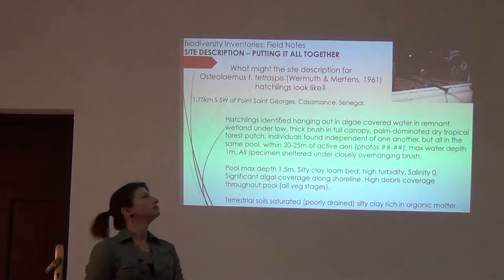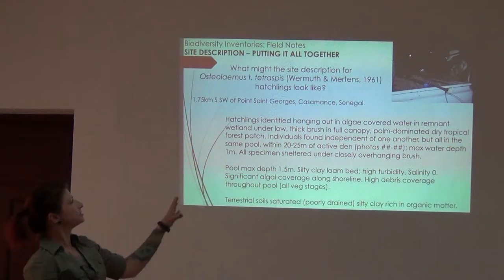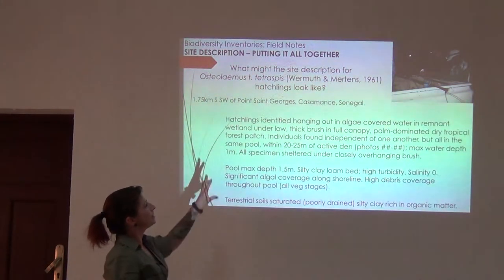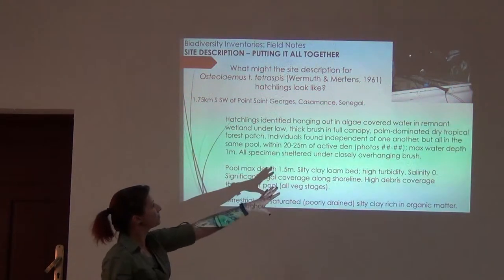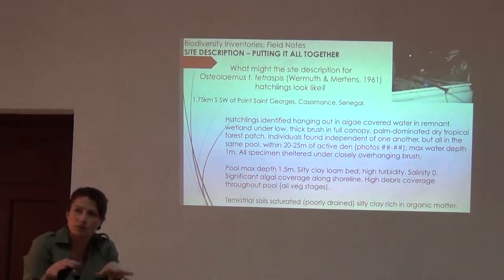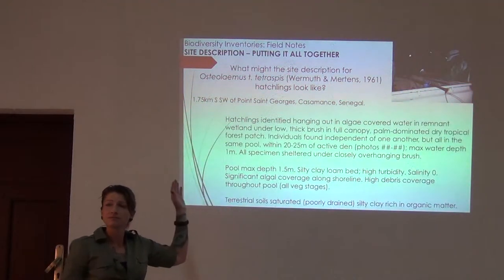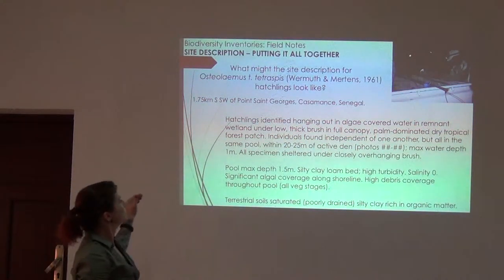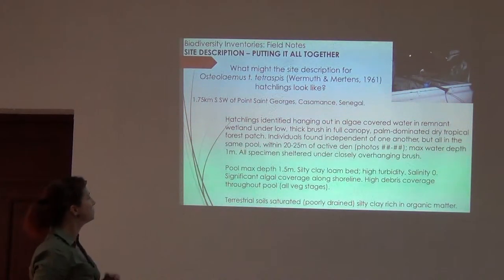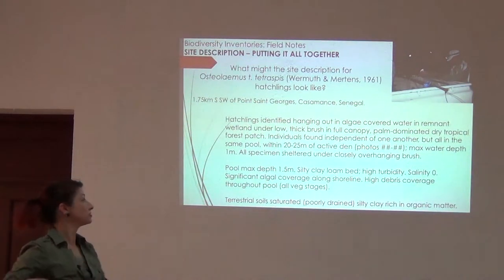So putting it all together — talking about my Osteolaemus guys. We were 1.75 kilometers southwest of Point St. George's in Casamance, Senegal. There's my written locality. I specifically state where we found the hatchlings: completely covered in the water, always under tight canopy conditions where the brush was very closely overhanging the water. Describe the water itself, the depth of the pool, how each specimen was distributed amongst the pool. Describe the soils of the pool and the soils on the terrestrial areas around it.